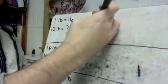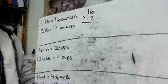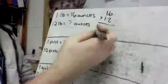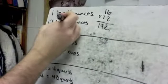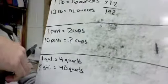So if I do 16 times 12, I believe that is 192. So we just put this right in here, 192 ounces. Next question.